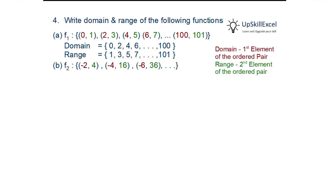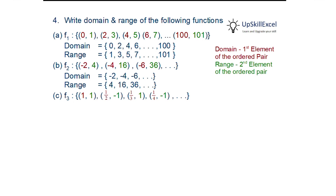For the second example, domain is {−2, −4, −6} and range is {4, 16, 36}. For the third function, taking first elements as domain and second as range, we see the range only repeats −1 and 1, so the range is limited to just two items: {−1, 1}.